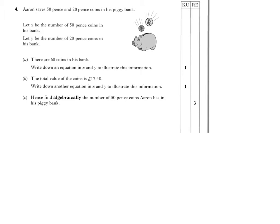Section 8, Example 3. Aaron saves 50p and 20p coins in his piggy bank. Let x be the number of 50p coins in the bank. Let y be the number of 20p coins in the bank.